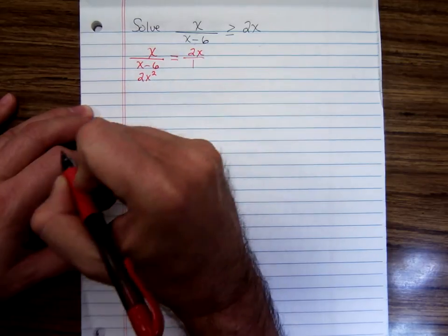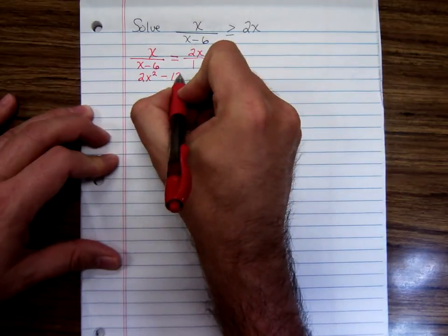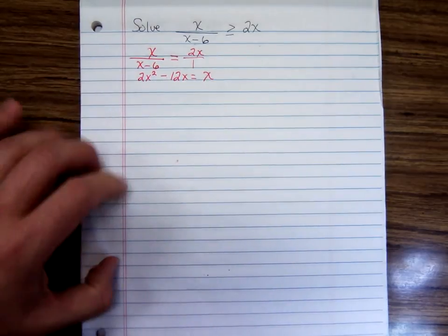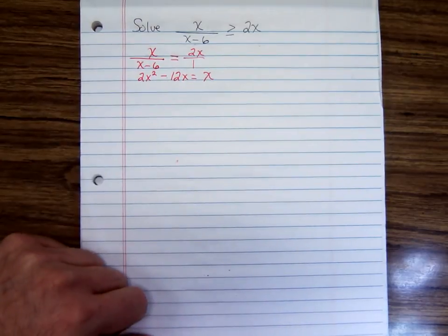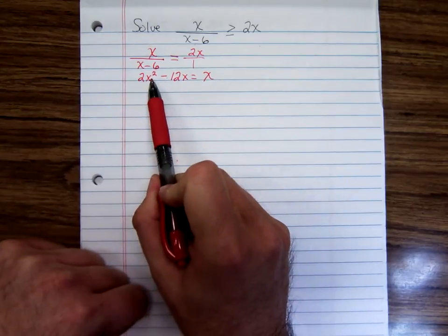2x times x is 2x squared minus 6 times 2x minus 12x equals 1 times x is just x. And we know this is a quadratic equation because of the x squared here.